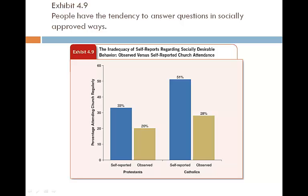Sometimes people have the tendency to answer questions in socially approved ways. Here we ask people how frequently they go to church. There are self-reported answers and observed answers. As you can see, the self-reported data ranks much higher than the observed data — 33 versus 20, and 51 versus 28. Clearly, self-reported church attendance is ranked much higher than observed data, which tells us that people tend to report socially approved behaviors more favorably.